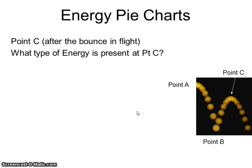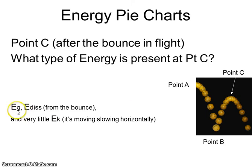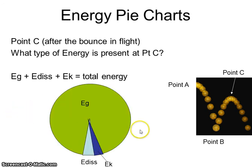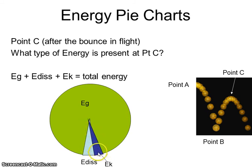At point C, there is gravitational energy, but not as much as at A because the ball is not as high. The Edis that occurred in the bounce carries forward through each of the different parts. The ball is also moving a little bit, so there's a small amount of kinetic energy, EK. So the pie wedge at point C shows gravitational energy, the Edis from the bounce, and a little bit of kinetic energy — these three energies add up to the total energy. As the ball bounces, the total energy stays the same; just the different forms start to appear.